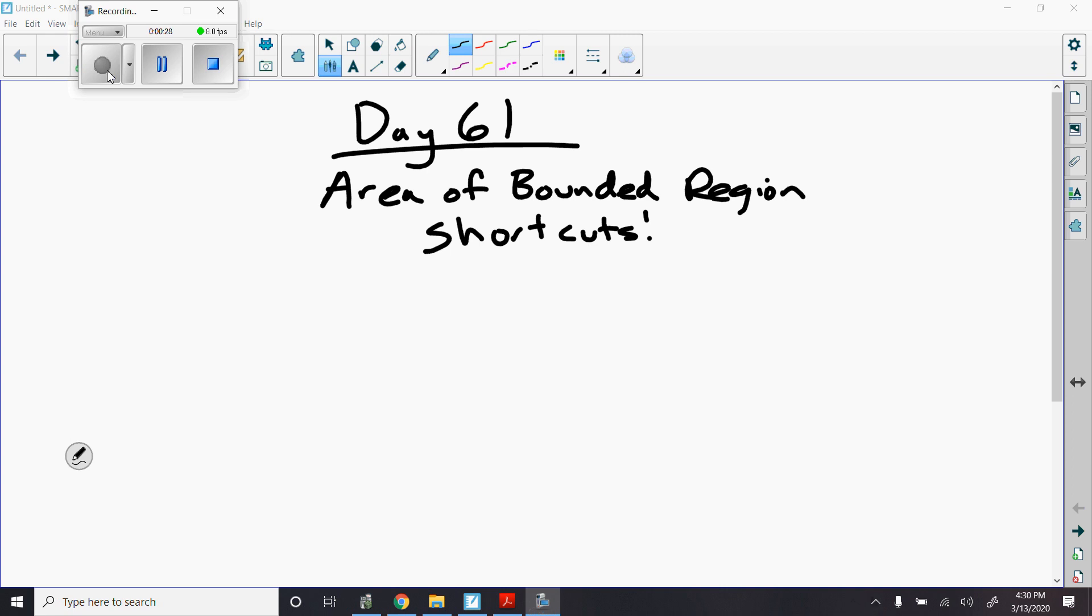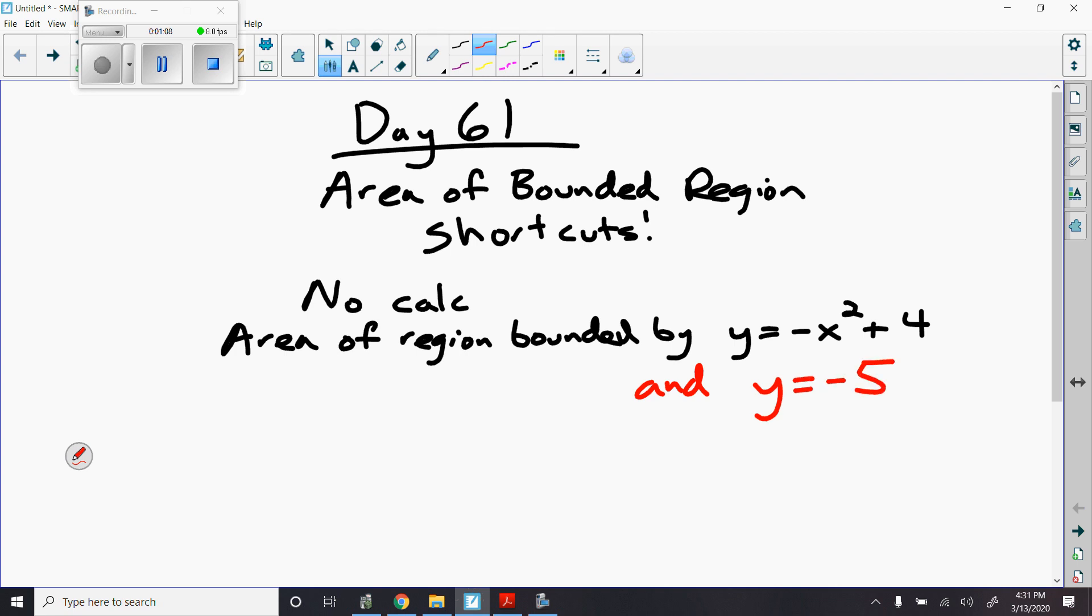Let's take a look at a sample no calculator problem. The problem is find the area of the region bounded by y equals negative x squared plus 4 and the line y equals negative 5. First off, with no calculator, I want to sketch this to get an idea of what I'm looking for. I'm going to solve this the normal way first, then I'm going to show you the shortcut.